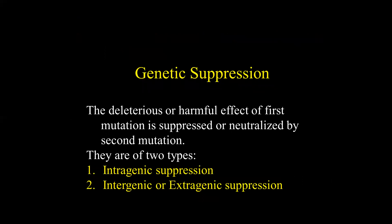The deleterious effect of the first mutation can also be suppressed by a second mutation. The second mutation may take place in the same gene or at a different site, and it brings about phenotypic correction. In genetic suppression, a second mutation at a different site — maybe in the same gene or a different gene — neutralizes the effect of the first mutation. There are two types: intragenic suppression and intergenic or extragenic suppression.